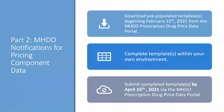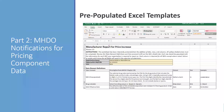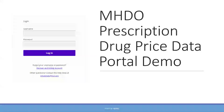Once pre-populated templates are made available on February 15th, you'll log into the MHDO prescription drug price data portal to download them. You'll complete those templates within your own environment and submit them by April 15th of 2021 via the portal. There's one tab that walks through the requirements, closely matching Chapter 570, and a second tab with all the fields for each requested NDC. I'm going to do a quick demo of what this looks like in the portal.